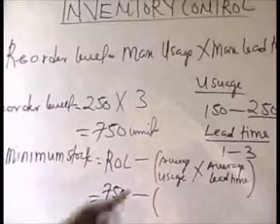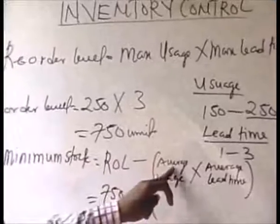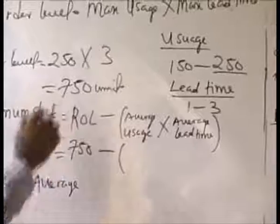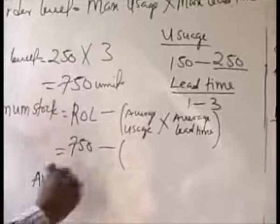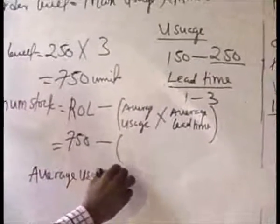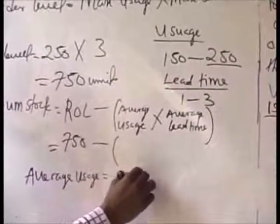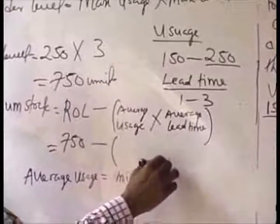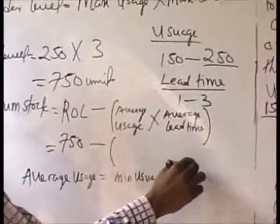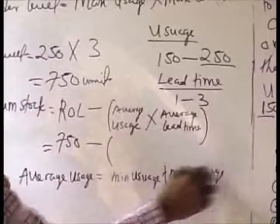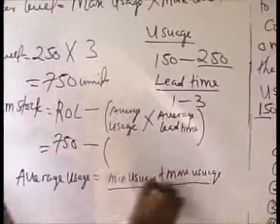Minus average usage. Our average usage equals minimal usage plus maximum usage, divided by 2.